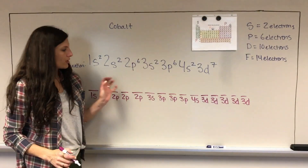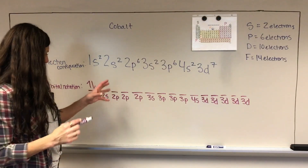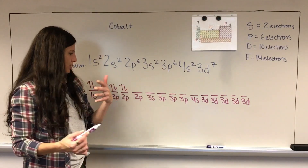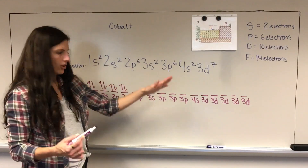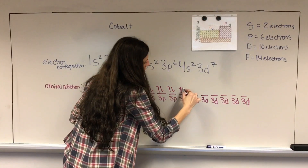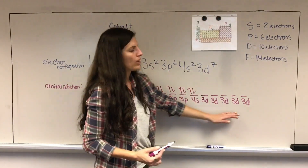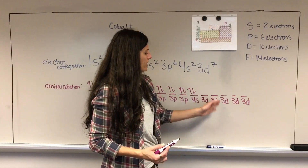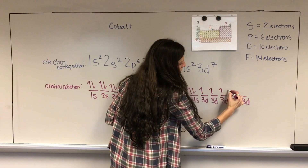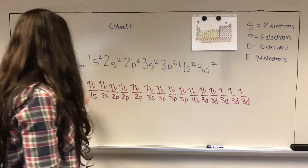Now you're going to go back and fill these up with electrons. You're going to have an up arrow and a down arrow, then an up and a down, following that pattern all the way through. The up and down arrows represent the spin of the electrons, which you don't need to worry too much about right now. Fill all the way until you reach the last subshell, which is the 3d. For 3d, you fill it differently: put one in each space first, then go back and double up until you have seven electrons - one, two, three, four, five, six, seven. That is your orbital notation for cobalt.